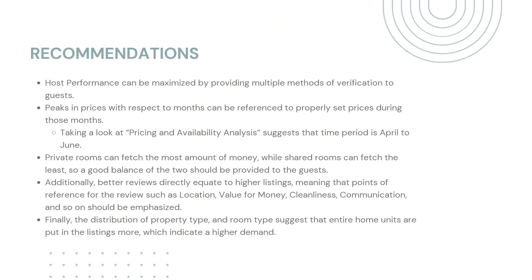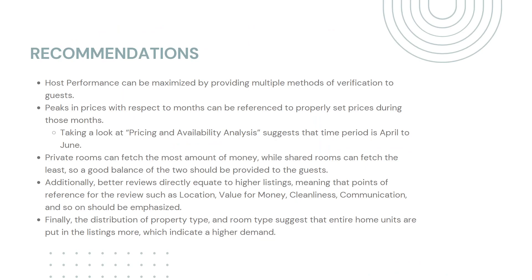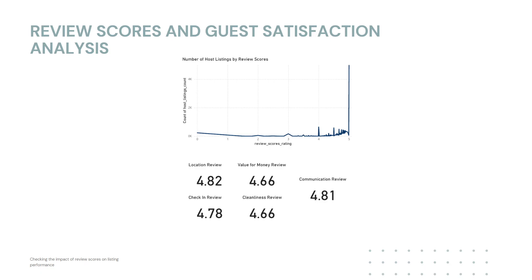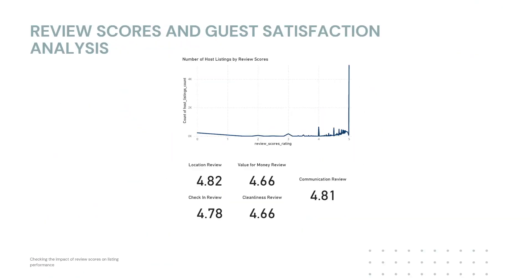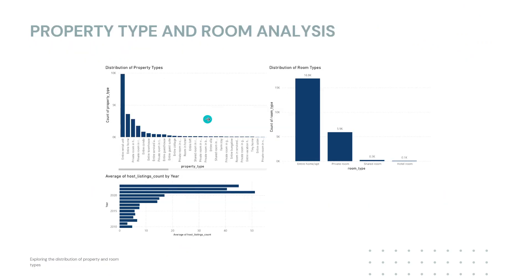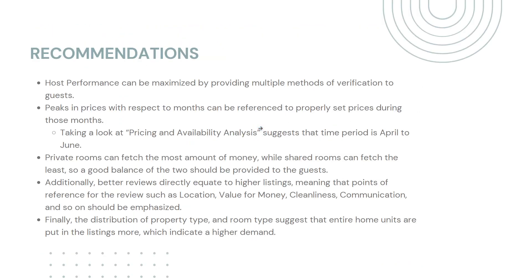Based on all of this information, I have some recommendations. First, host performance can be maximized by providing multiple methods of verification to guests — the higher the number of verifications, the more ways guests can contact you. The peaks in prices with respect to months can be referenced to properly set prices during those months; the pricing and availability analysis suggests this time period is April to June, as shown by this graph. Private rooms and entire home/apartments can fetch a lot of money, while shared rooms can fetch the least amount, indicated by the green line. Hosts need to provide a good balance of the two to get the optimal number of guests.